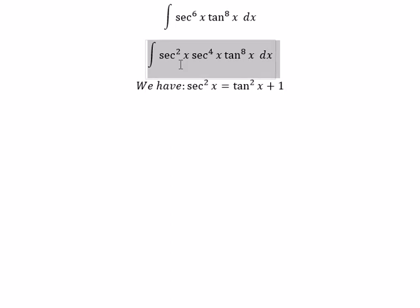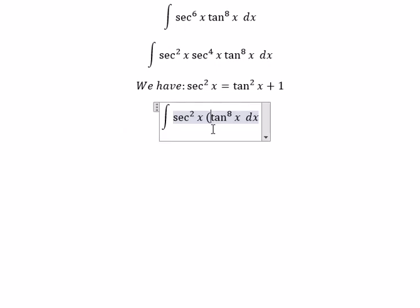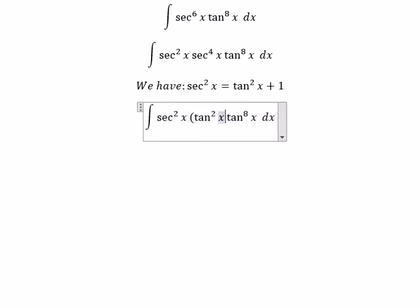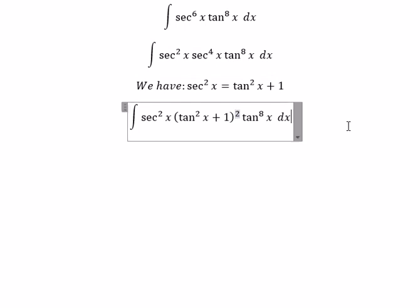We get (tan^2(x) + 1) to the power of 2, because this expression is squared. This one is power 4, so we have power 2 here. Next, we need to use integration by substitution.